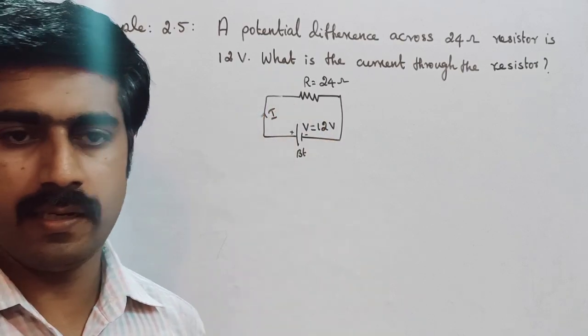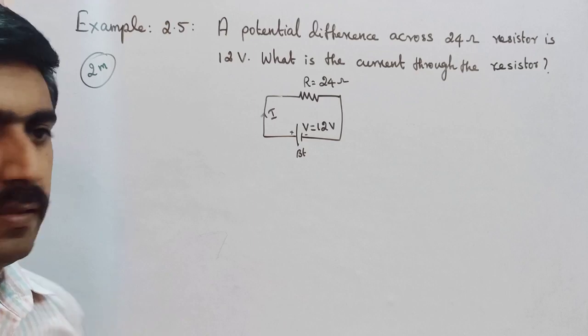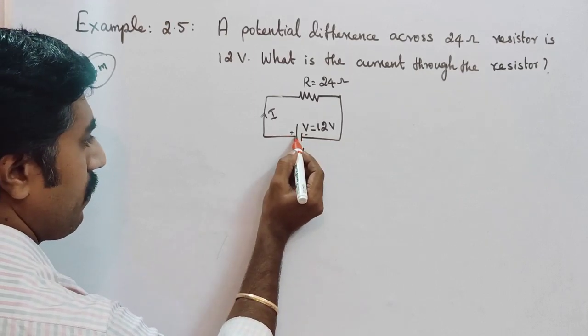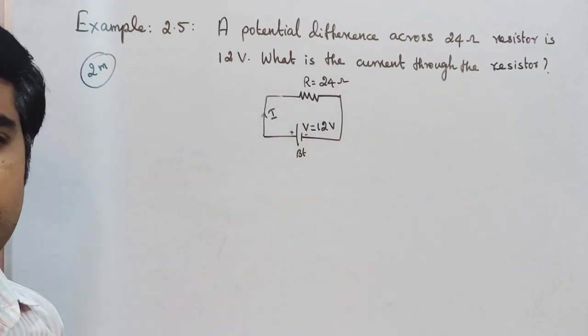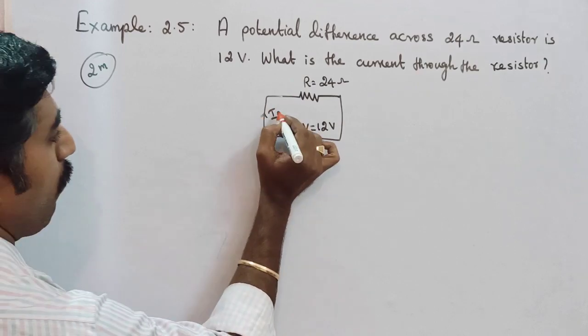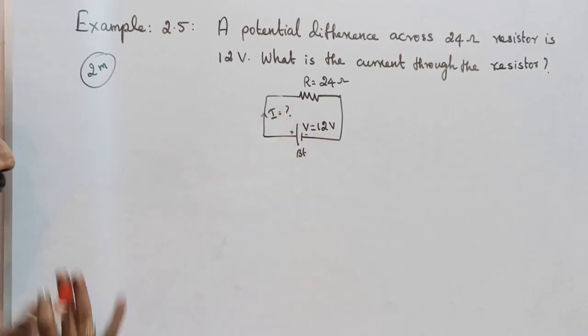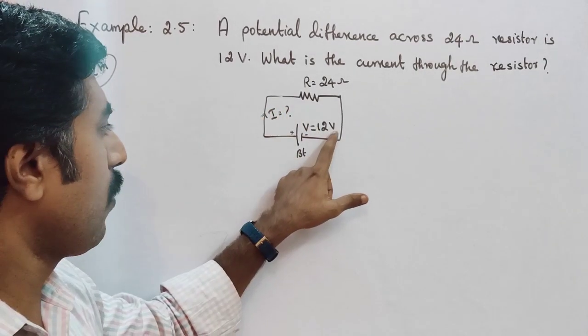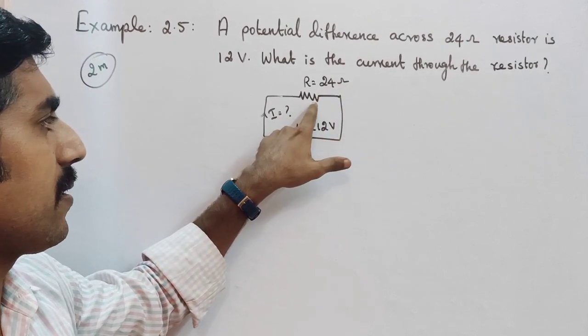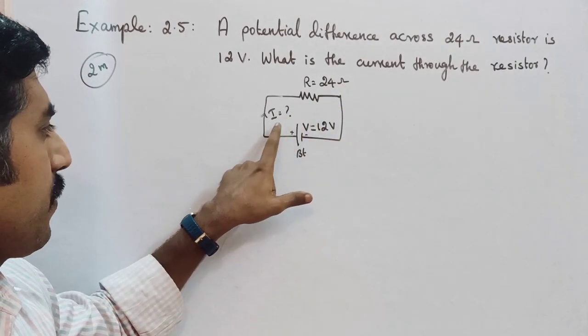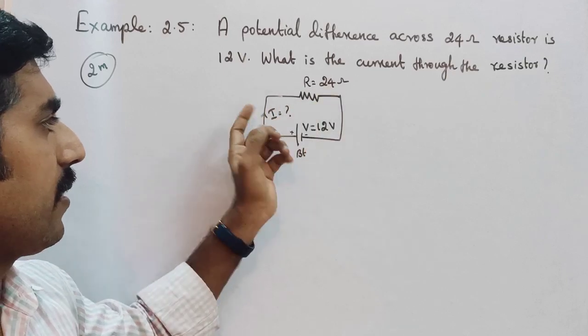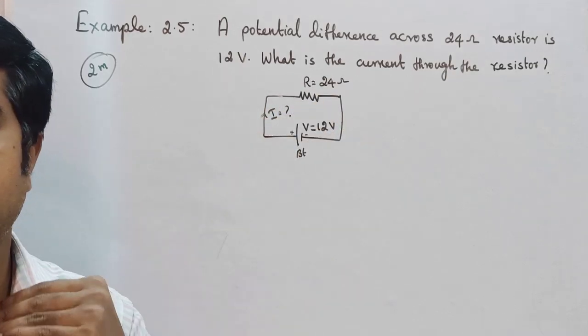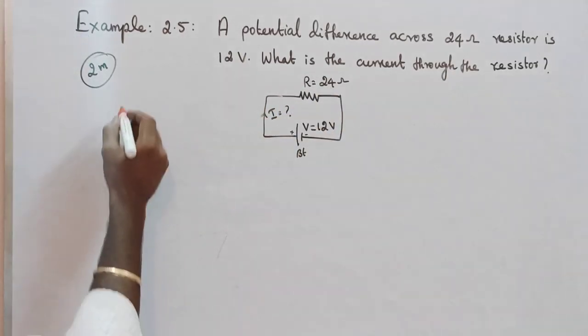So externally. Internally negative to positive, but externally. So what about the amount of current? So this is a question. That is 12 volt potential difference, 24 ohm value resistor. The flow of the resistor, the flow of the current value.